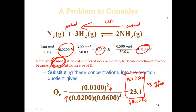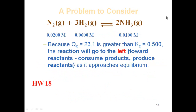Because QC = 23.1 is greater than KC = 0.5, the reaction will shift to the left toward reactants, consuming products and producing reactants, until it approaches equilibrium. Once equilibrium is reached, the forward and reverse rates are equal and the reaction is just an exchange. If you guess without calculating, you have a 50/50 chance of being right — it's best to calculate. Your homework includes questions about Q and predicting which way things shift, and this Q step may also be needed as part of larger problems involving ICE tables.